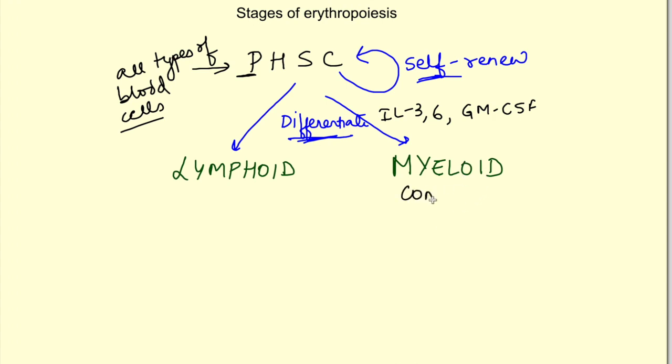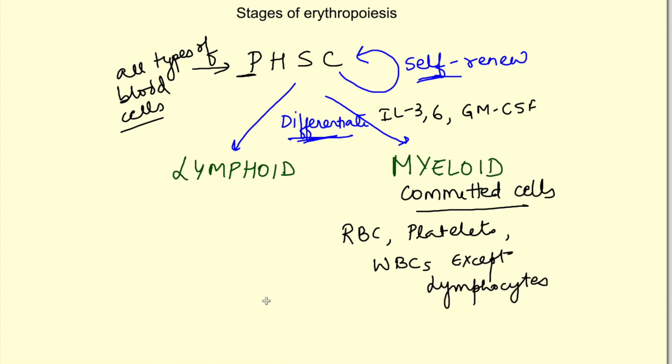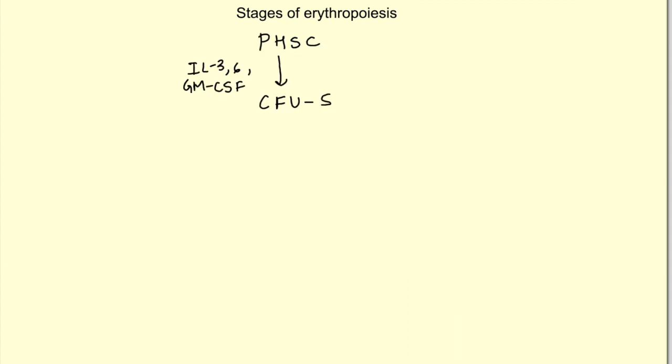With this differentiation there is production of committed cells which can form cells of the myeloid lineage. The cells of myeloid lineage include erythrocytes, megakaryocytes, and other WBCs apart from lymphocytes. This particular cell differentiates into formation of leukocytes, and the other differentiates into formation of either erythrocytes or megakaryocytes. This is known as colony forming unit erythrocyte/megakaryocyte or CFU-EM.